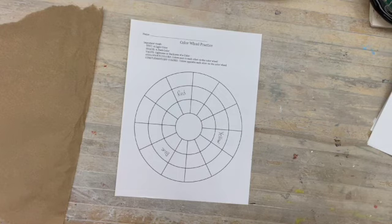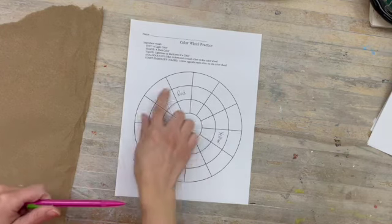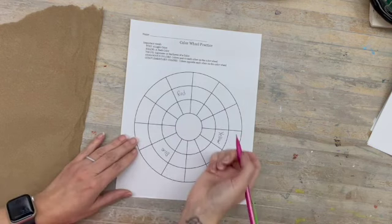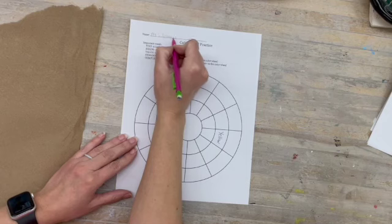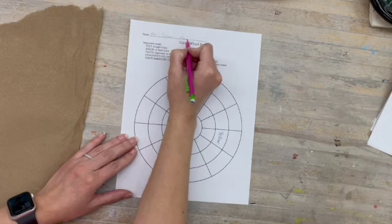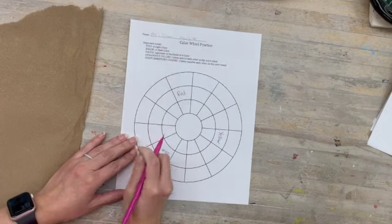Today we are going to make a color wheel using oil pastels. You've got a color wheel right here. Write your name and your class number on the top.